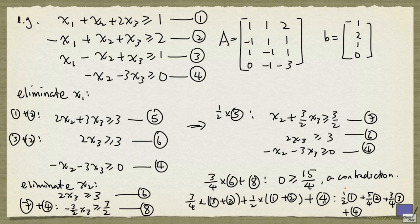And the certificate of infeasibility will be given by these coefficients here. So we can set y to be 1 half, 5 quarters, 3 quarters, and 1.